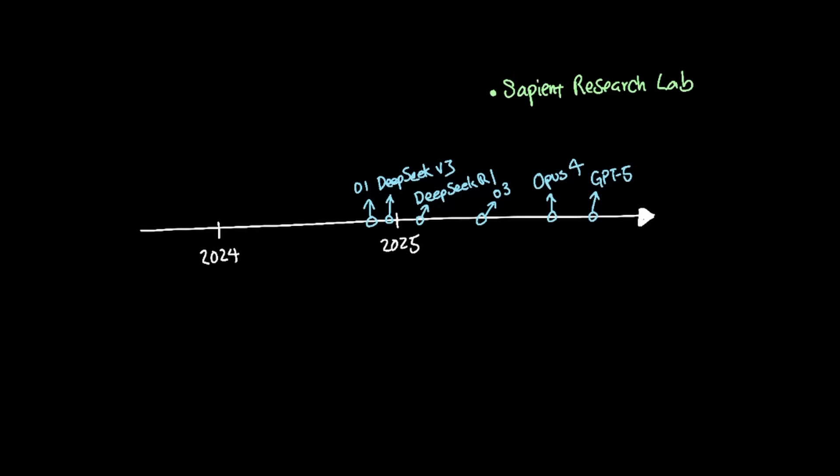So when Sapien Research Lab published a paper in June and released a model called HRM in July, people were certainly impressed by how a model that's a thousand times smaller can achieve better results than its counterparts.